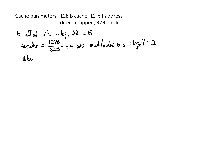For the number of tag bits, basically anything that remains of our address is for the tag. We've got 12 total bits, we've used 5 for the offset and 2 for the index, which leaves us with 5 bits remaining for the tag. The uppermost 5 bits would be for the tag.